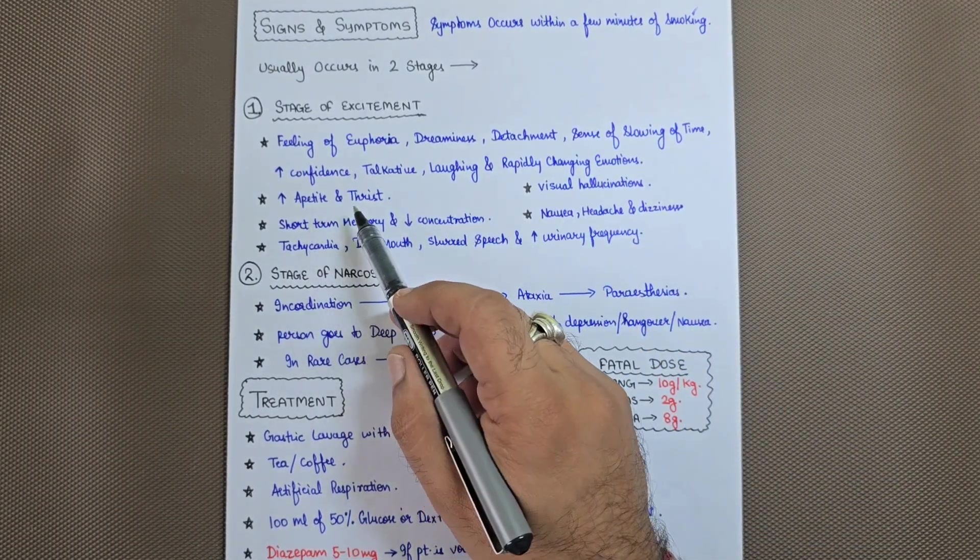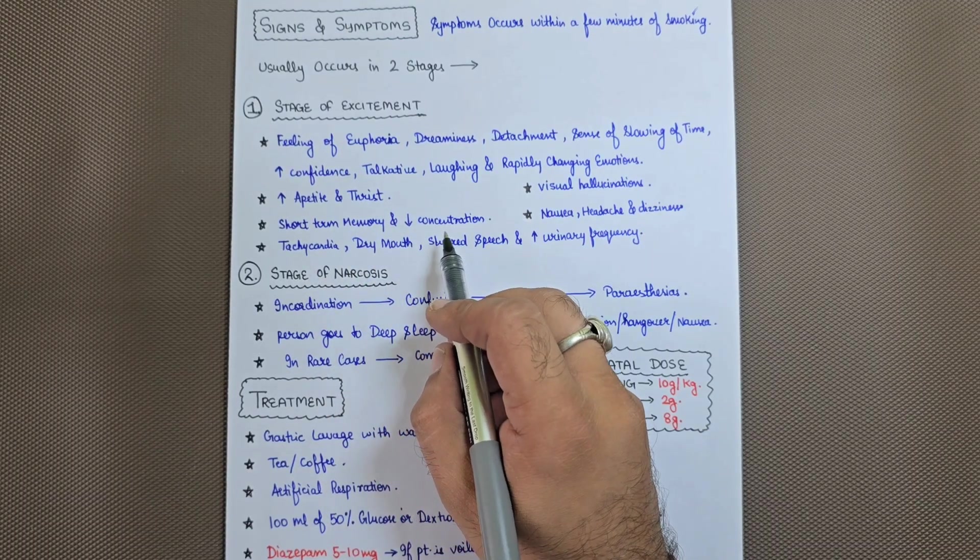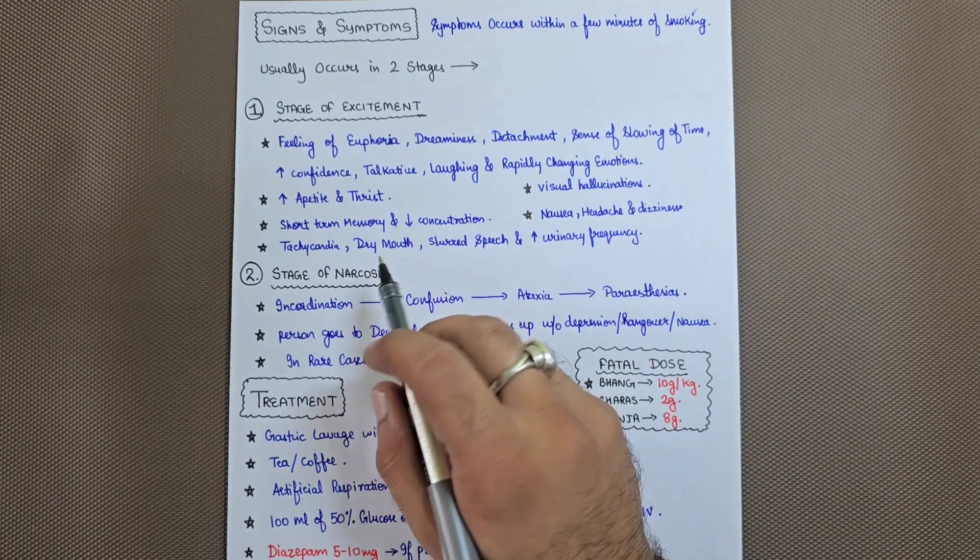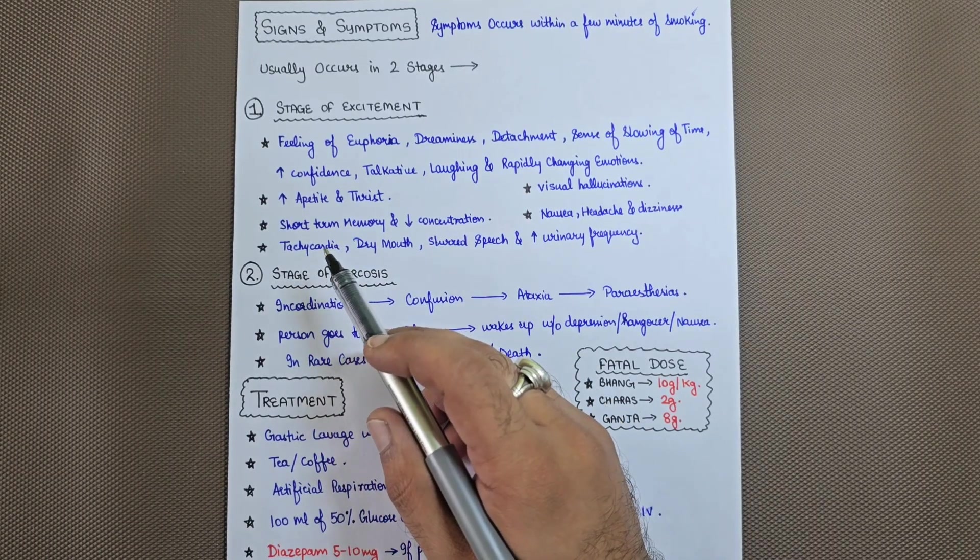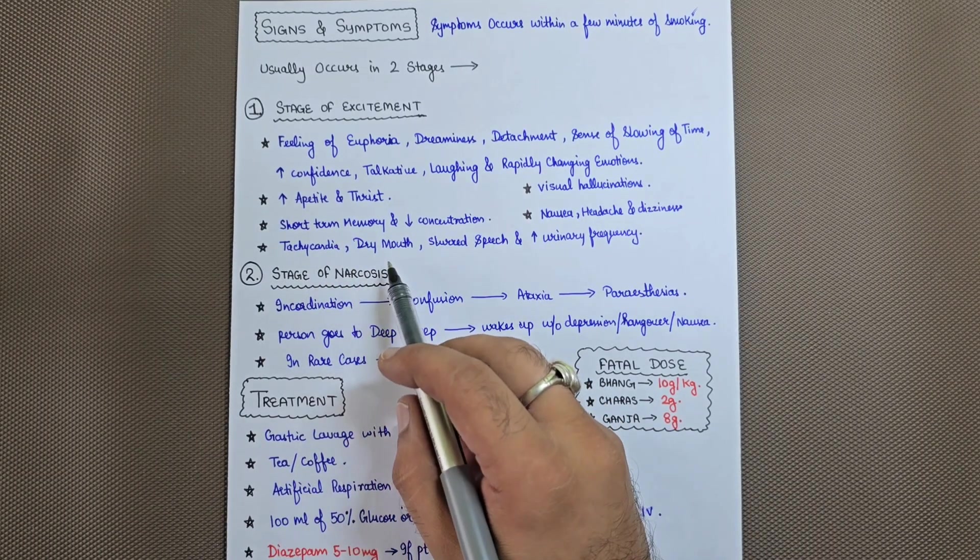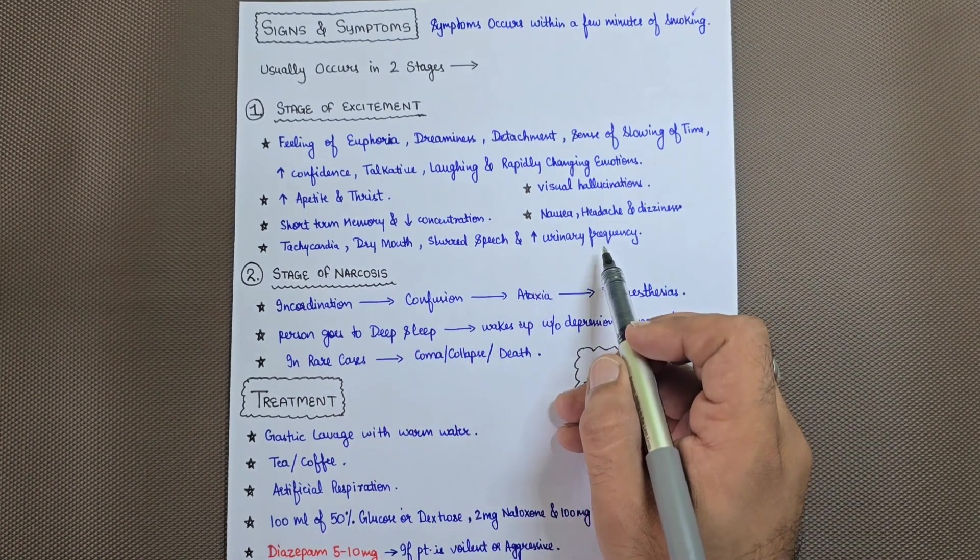There will be increased appetite and thirst, short-term memory impairment, and decreased concentration. Also, tachycardia due to catecholamine release, dry mouth, slurred speech, and increased urinary frequency will be seen.